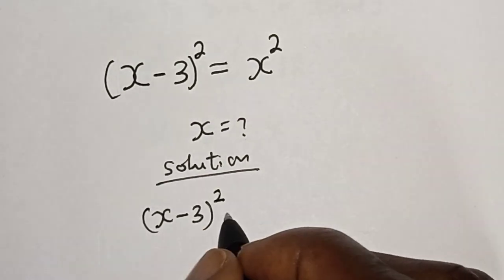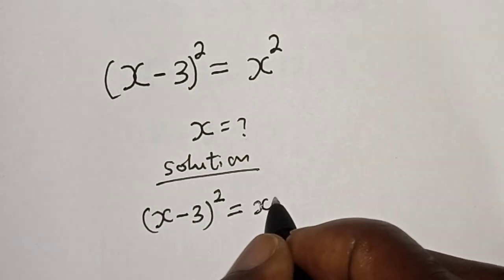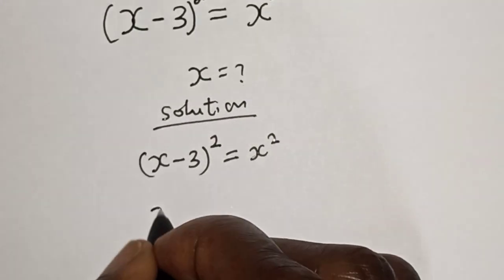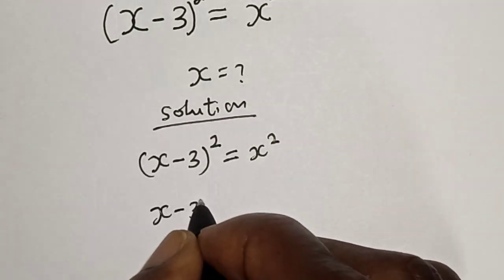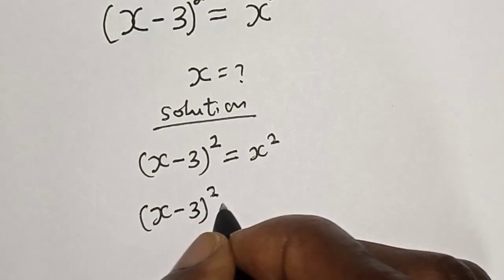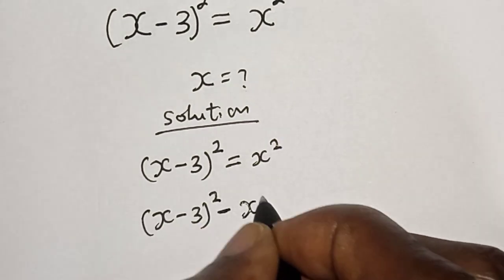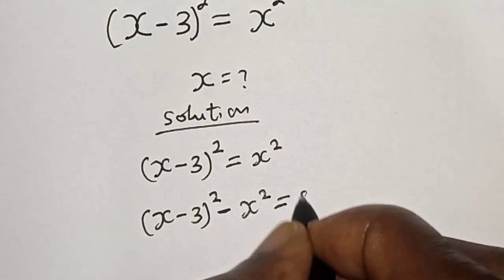Solution: we have x minus 3 square is equal to x square, and this is x minus 3 square minus x square is equal to 0.